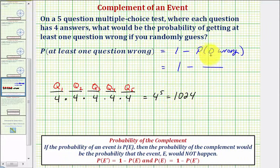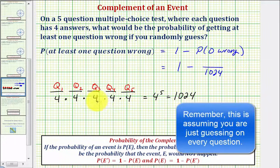So the denominator for the probability of zero wrong would be 1,024, the favorable number of ways of getting zero wrong. There's only one way to get all the questions right, so the probability of zero wrong is one divided by 1,024.